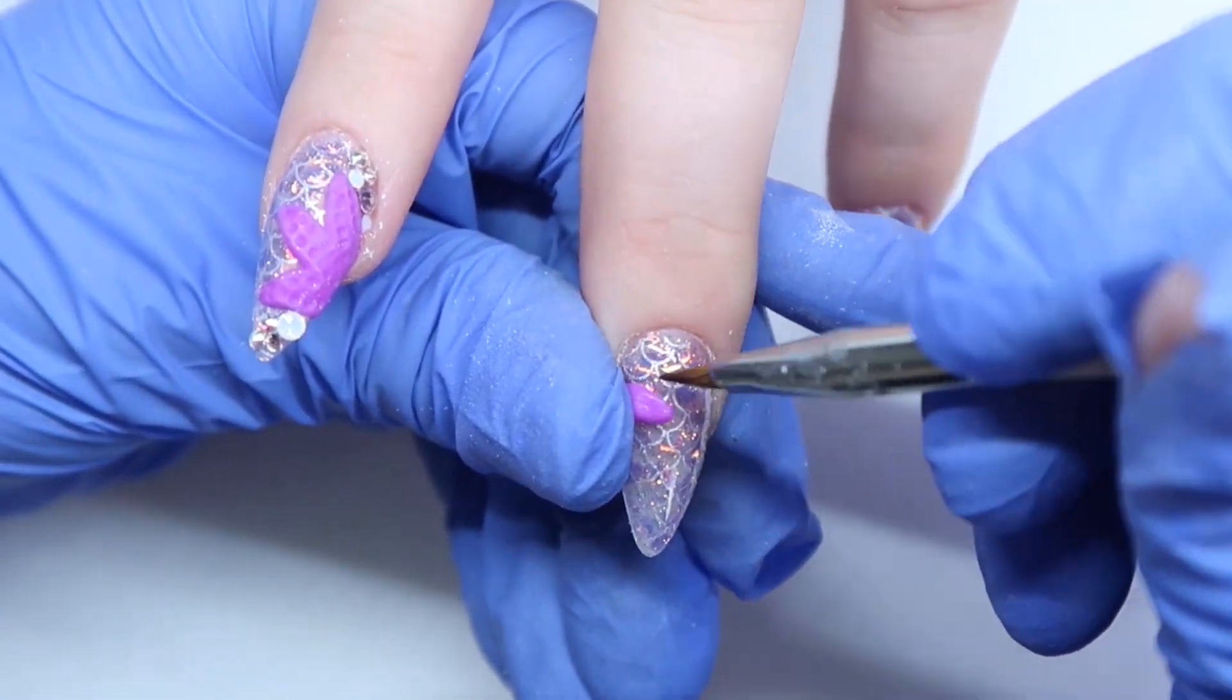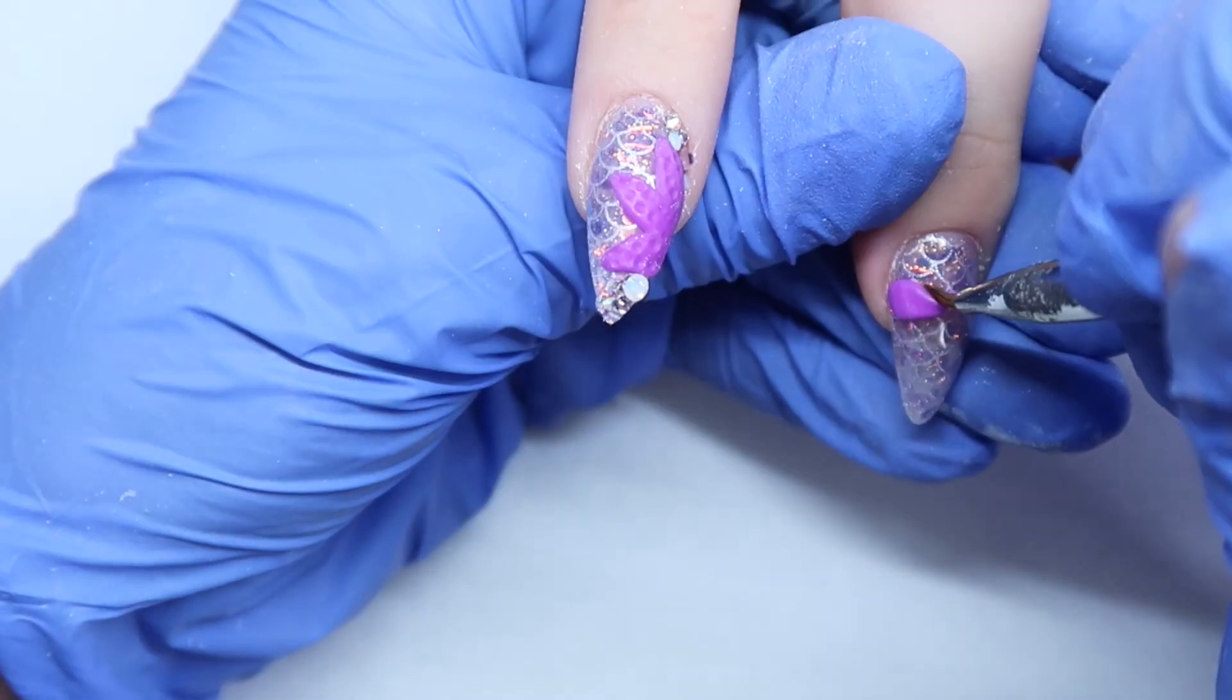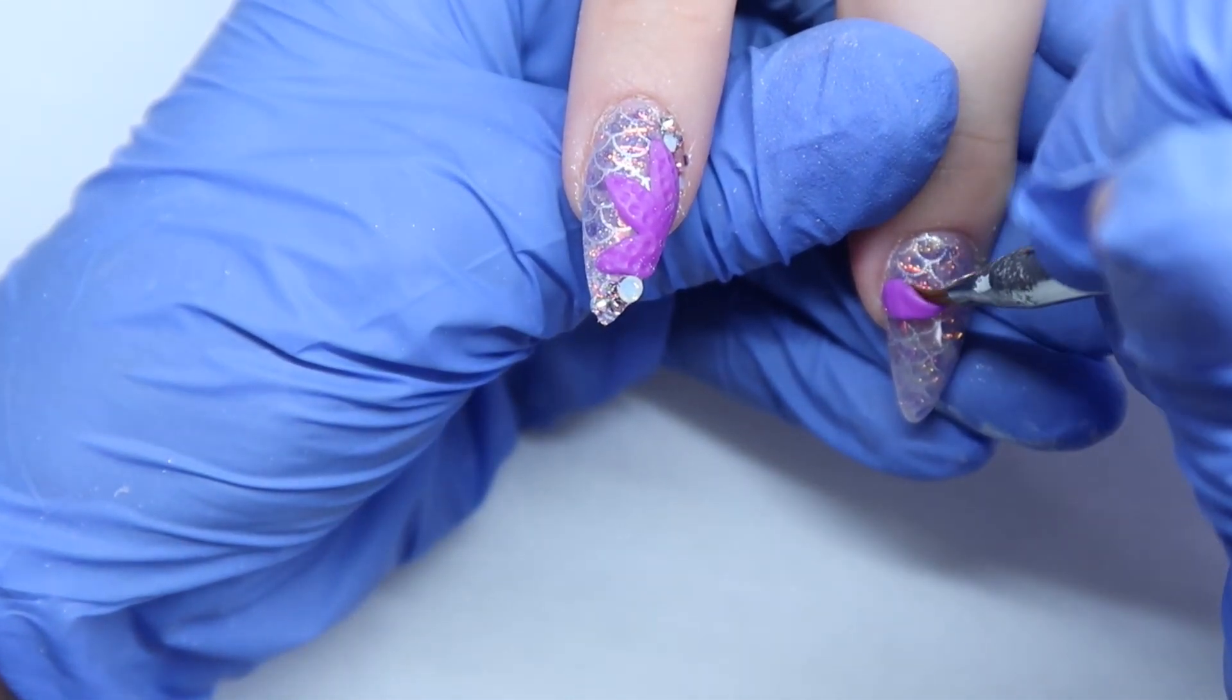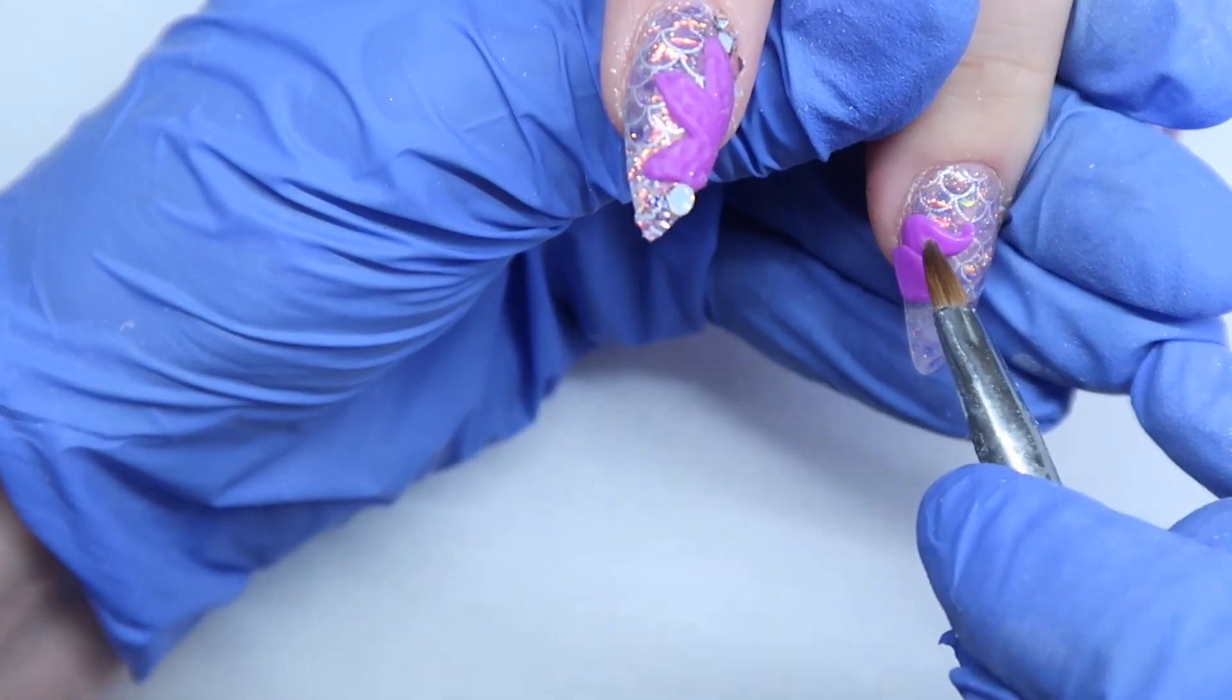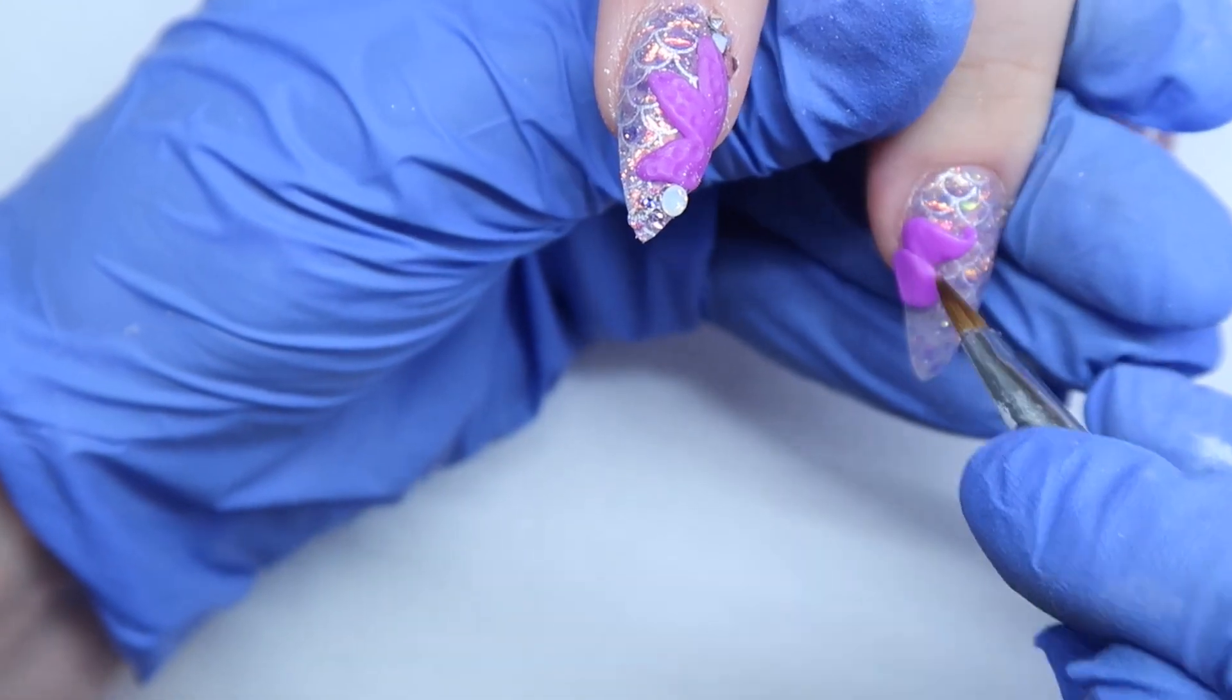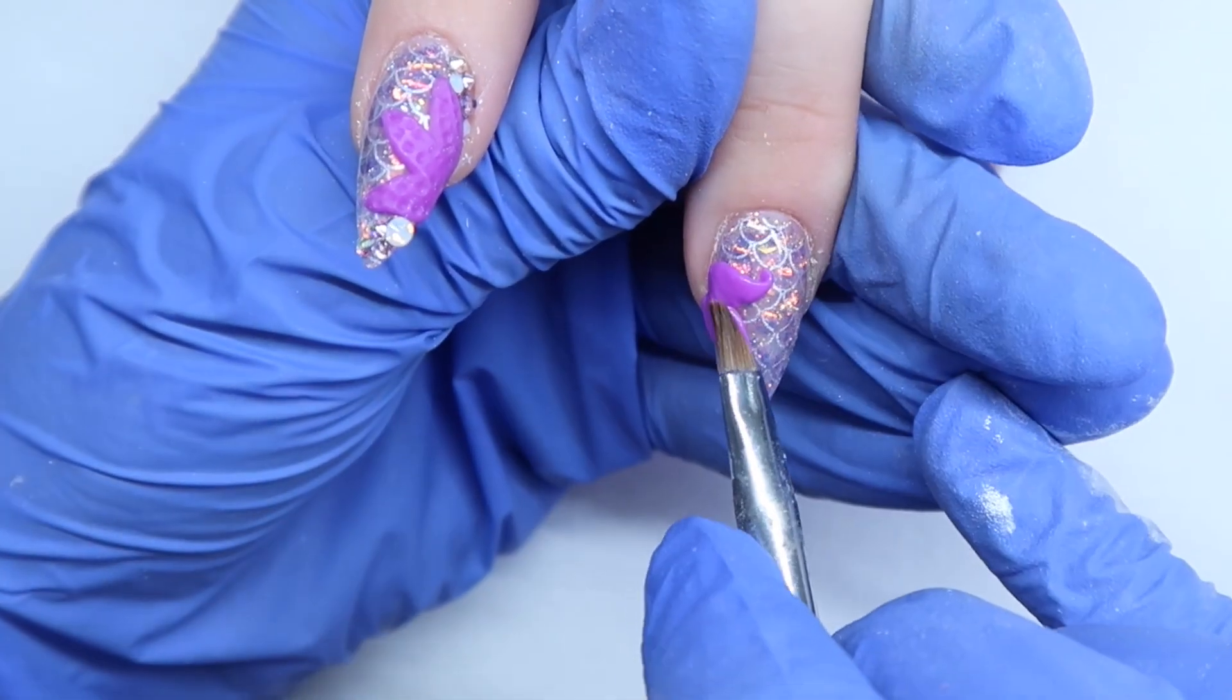So I'm just using that same 4D gel to create a dead starfish half. So it's the other half of the starfish, but I curled up the ends here to make it like a dead starfish. And I'm applying it the exact same way. But I did find it a lot easier to apply the 4D gels on top of already cured gel.